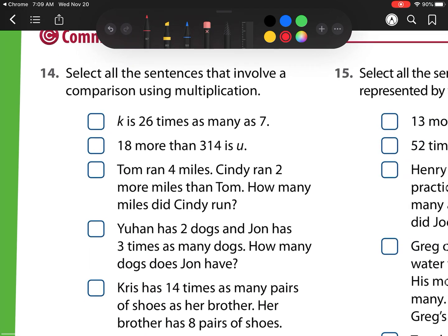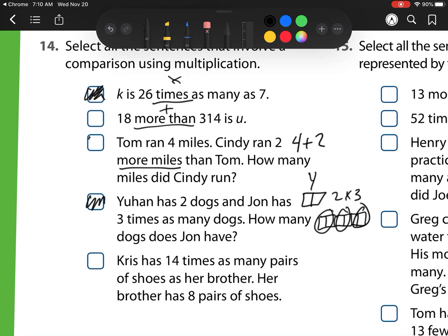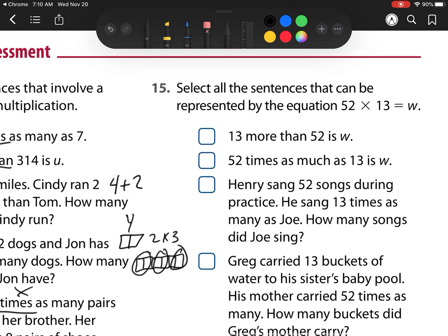Select all the sentences that involve a comparison using multiplication. Well, we have this times as many. K is 26 times as many, so I'm going to select that box. Remember, more than is typically an addition problem. Tom ran 4 miles, Cindy ran 2 more miles, so that is an addition problem, 4 plus 2. So I'm not going to mark that one. Johan has 2 dogs and John has 3 times as many. So that would be Johan's group, and then John's would be 1, 2, 3 times as many, because I see those 3 groups. So that is a multiplication problem, 2 times 3. Chris has 14 times as many pairs of shoes as her brother. So again, I see that times part. Her brother has 8 pairs of shoes. So I'm selecting that because it's a comparison. None of those wanted me to find the answer. It just wanted me to show which ones use that multiplication.